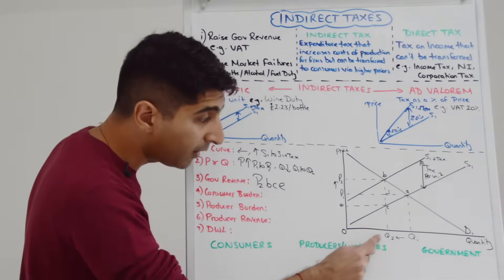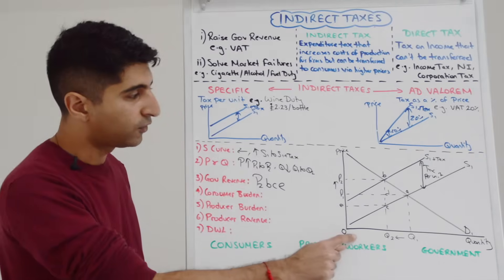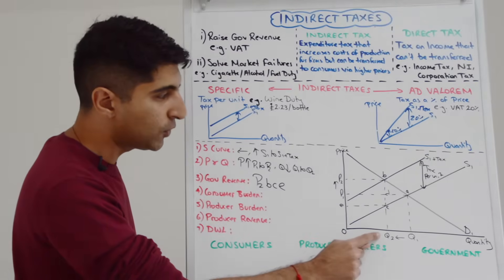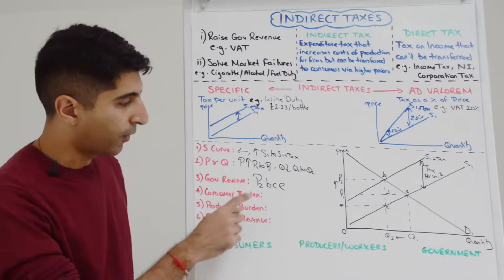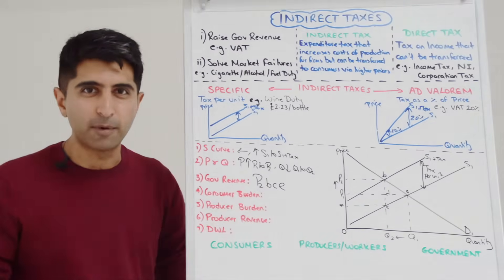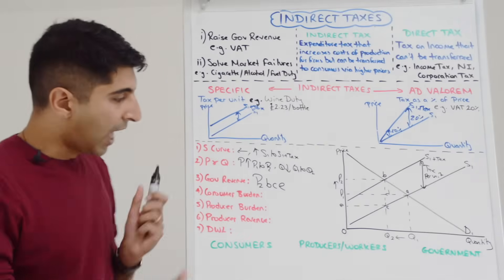I'll go through that again. You go to the new equilibrium. The vertical distance between the two supply curves is the tax per unit, that's BC, multiplied by all the units being produced and sold, that's everything up to Q2, gives you the area of that box P2BCE. That is the government revenue.